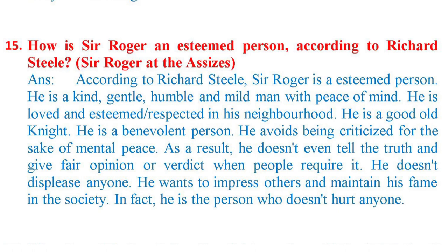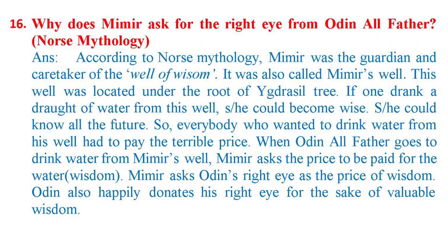Question 16: Why does Mimir ask for the right eye from Odin Allfather? (Norse mythology) Answer: According to Norse mythology, Mimir was the guardian and caretaker of the Well of Wisdom, also called Mimir's Well. This well was located under the root of the Yggdrasil tree. If one drank a draught of water from this well, he could become wise and know all the future. So, everybody who wanted to drink water from his well had to pay a terrible price.